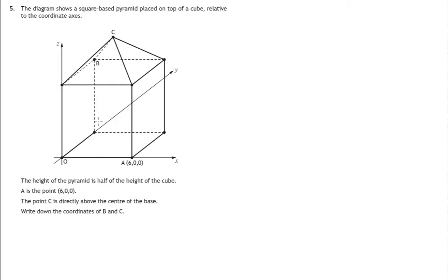Here we have a diagram of a cube with a square-based pyramid on top of it, and it's sitting on an x, y, z axis. We're told A is the point 6,0,0, we're told that C is directly above the centre point of the base, and we're asked to find the coordinates of B and the coordinates of C.